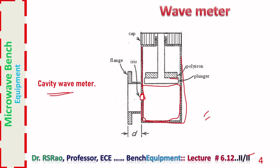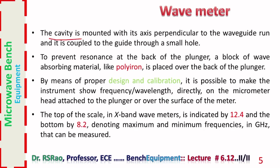The cavity is attached to a waveguide run through a small hole called an iris. When a wave is travelling in the waveguide run, this wave gets absorbed by the cavity when the resonant frequency of the cavity tallies with the frequency of the wave travelling in the waveguide run.